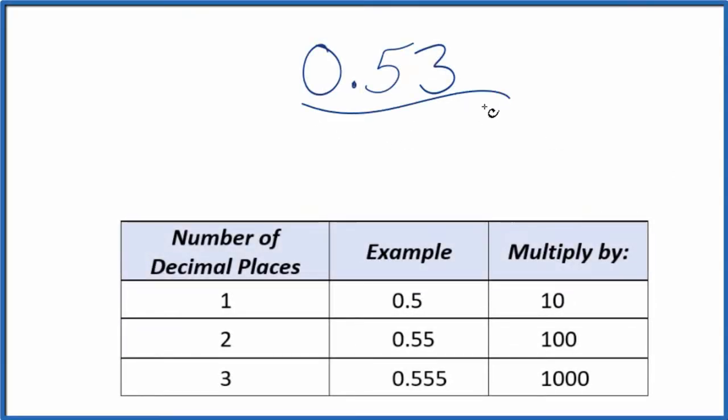Let's write the decimal 0.53 as a fraction. And here's how we'll do it. First thing we want to do is take 0.53 over 1. We're just dividing by 1. We don't change the value, but now we have the start of a fraction.